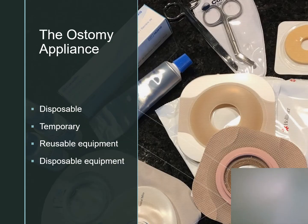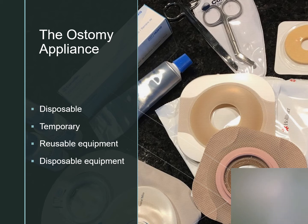The ostomy appliance is a collection device worn over a stoma that collects feces. It can be a disposable one- or two-piece device with a pouch and a face plate or disc. Temporary devices are preferred in the immediate postoperative phase. Reusable equipment is also available and involves an O-ring on the face plate that allows the pouch to be replaced as needed. It may also have a belt to help support the weight of the pouch.